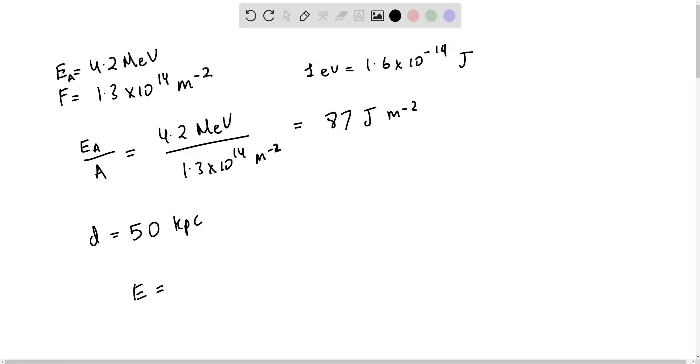the total energy output from the source, is going to be equal to 4πd²—this is just the surface area of a sphere—multiplied by the neutrino energy flux, which is